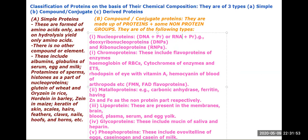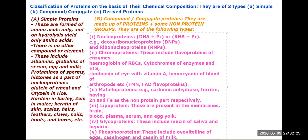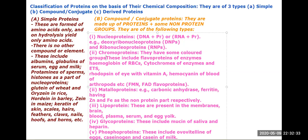When you stain DNA, you don't actually stain the DNA — you stain the DNP. The full form of DNP is deoxyribonucleoproteins, and the full form of RNP is ribonucleoproteins.